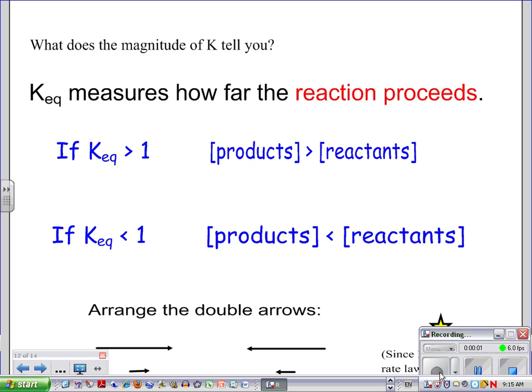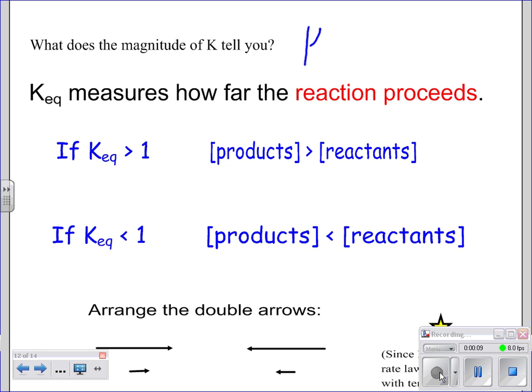Now we want to think about what the magnitude of K really means, and we saw this in that last example from the previous video. K equals the concentration of your products raised to the power of their coefficients divided by the concentration of the reactants raised to the power of their coefficients.